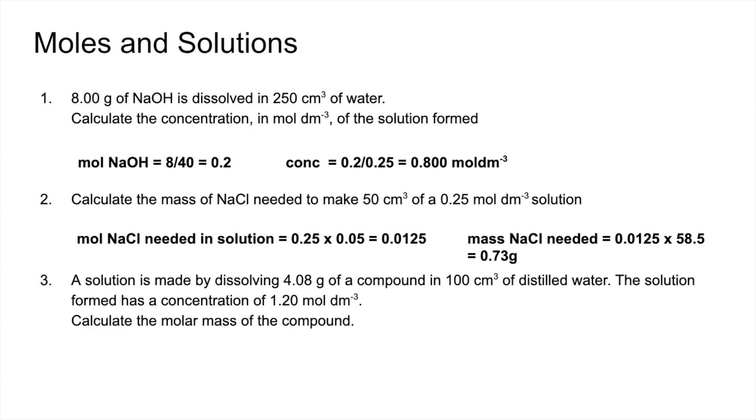Number three, similar to two. We've got the concentration and the volume of the solution, so we work out how many moles of the compound are needed. So concentration times volume, 0.12. And then to work out the MR, it's mass divided by moles. So 4.08 over 0.12, 34 grams per mole.